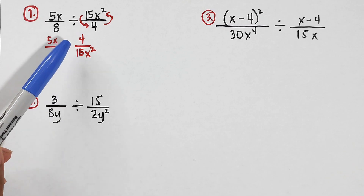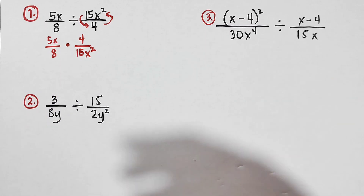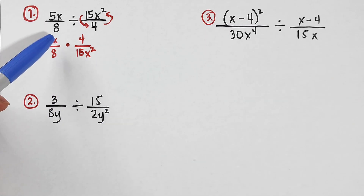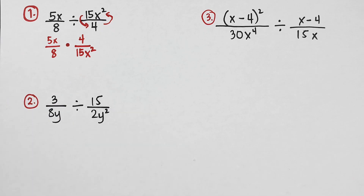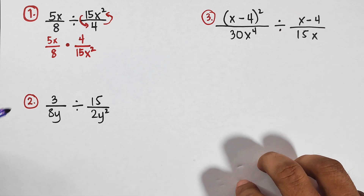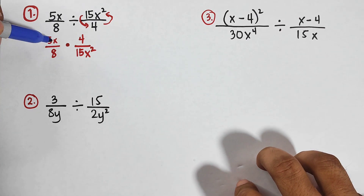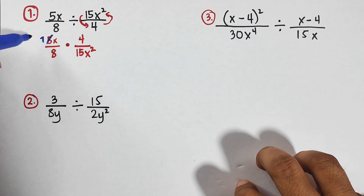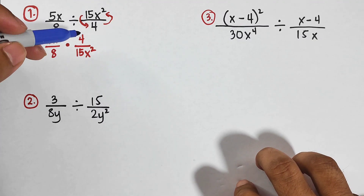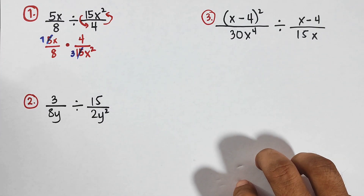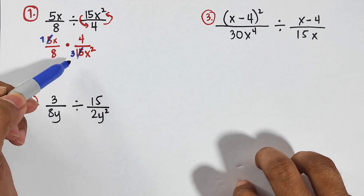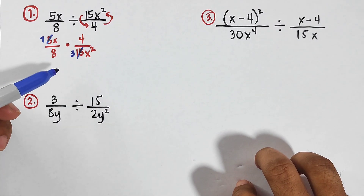Now we can multiply numerator to numerator and denominator to denominator: 5x times 4, and 8 times 15x squared. But before multiplying, we simplify. For 5 and 15, their GCF is 5, so 5 divided by 5 is 1, and 15 divided by 5 is 3.